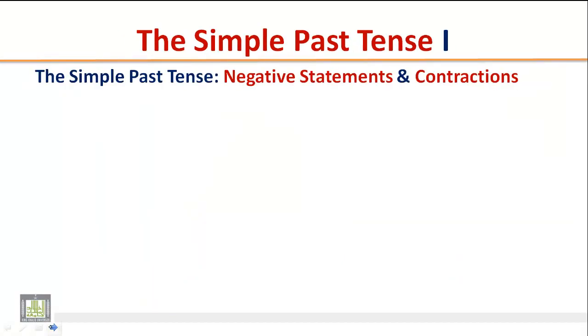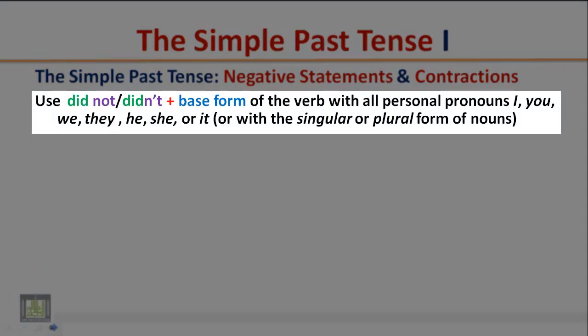The Simple Past Tense: Negative Statements and Contractions. Use did not or didn't plus base form of the verb with all personal pronouns I, you, we, they, he, she, or it, or with the singular or plural form of nouns.